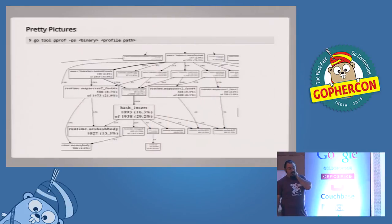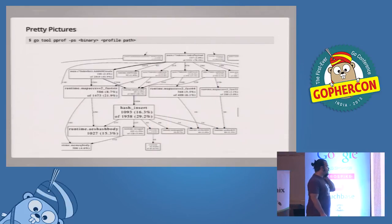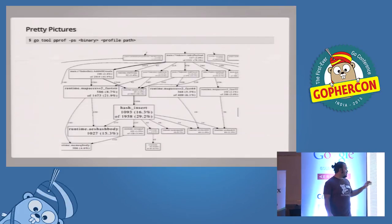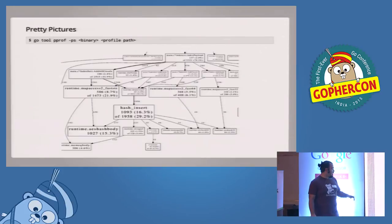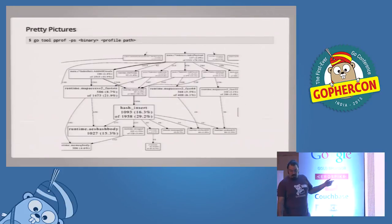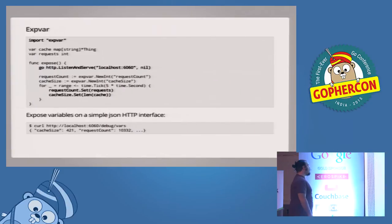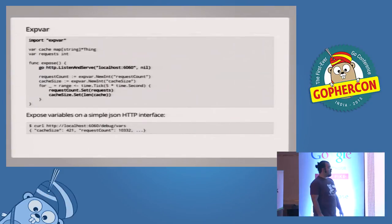My favorite thing to do with pprof is make these pretty pictures — call graphs where the big boxes correspond to places where you're spending a lot of time. I'll go into this with more detail in the next section. Another way we can figure out where to change code is by instrumentation using expvar.